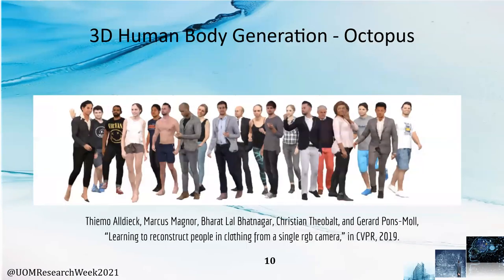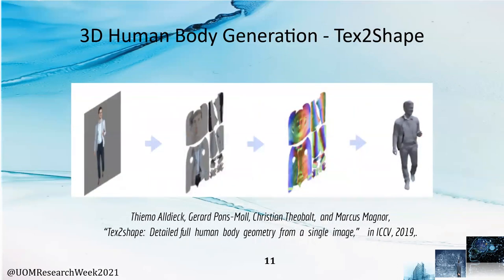In Octopus, it takes 1 to 8 RGB image frames as the input and generates a 3D human body model which is a non-animatable fixed-pose model. To animate the model, we should manually add a bone structure which is manual rigging. Because of that reason, we eliminated using Octopus. Text to Shape is an improved version of Octopus which uses dense poses done by Facebook research. The accuracy of the model has been improved while the training time has been immensely reduced. But the output is still a fixed-pose model that cannot be used to animate without manual rigging. Because of that, we eliminated using Text to Shape as well.